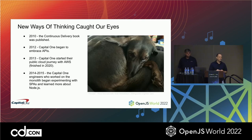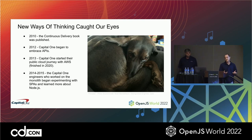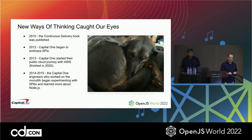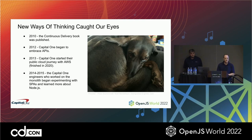We wanted to move faster. Fortunately, in the 2010s, a lot of new thinking caught our eyes. The 2010 Continuous Delivery book by Farley and Humble really influenced our thinking around automation. In 2012, Capital One embraced an API imperative similar to what Amazon had done about 10 years previously, helping us think about layer abstraction. In 2013, distributed systems began to influence us, and Capital One began its AWS cloud journey — which we finished in 2020, now 100% in AWS.